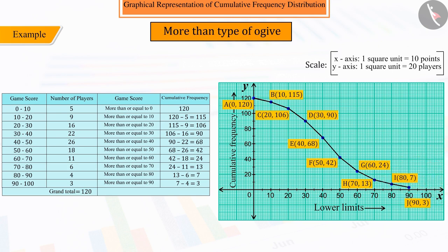If you look at this graph carefully, you will notice that we have got a curve here, which we call cumulative frequency curve or Ogive of more than type.